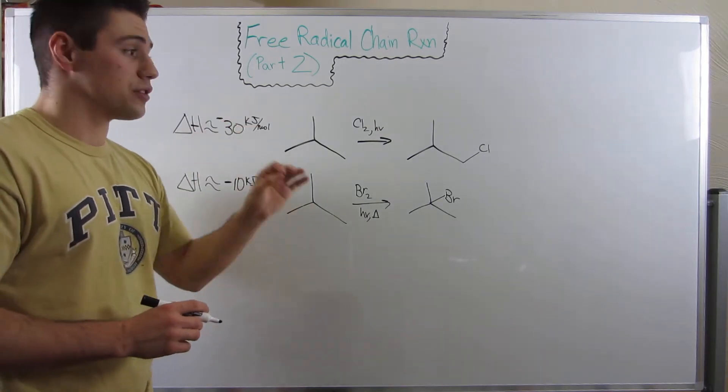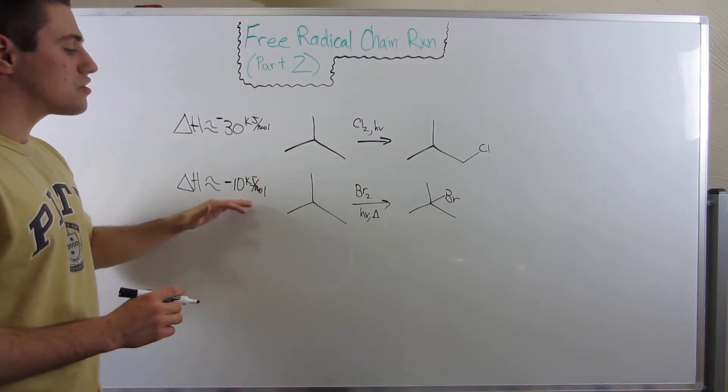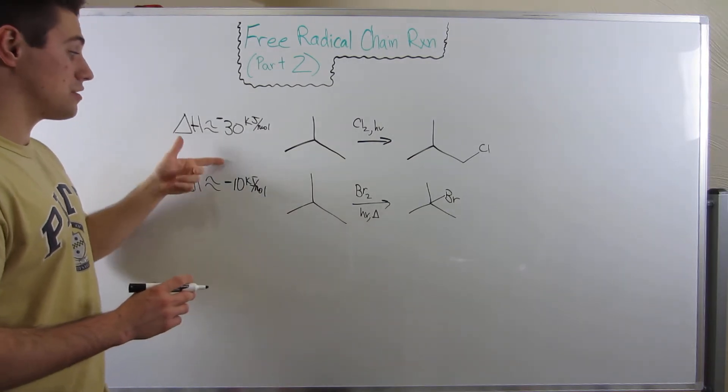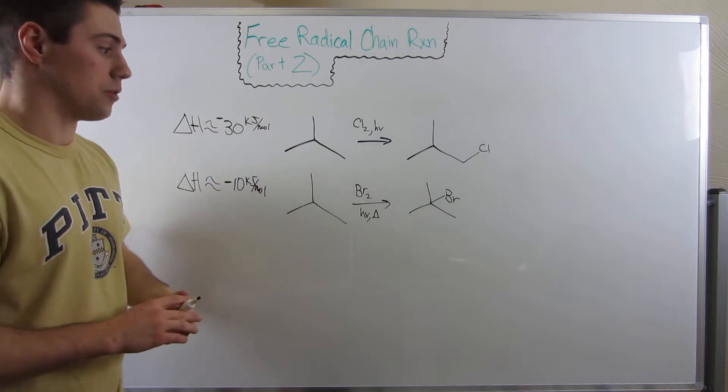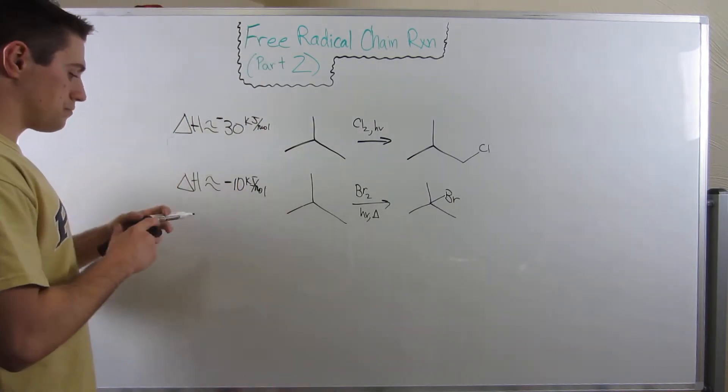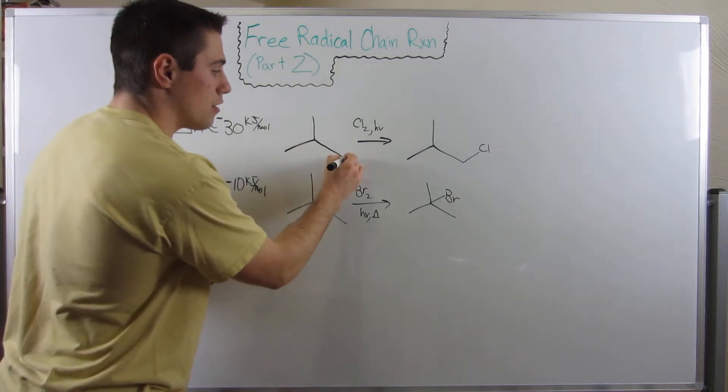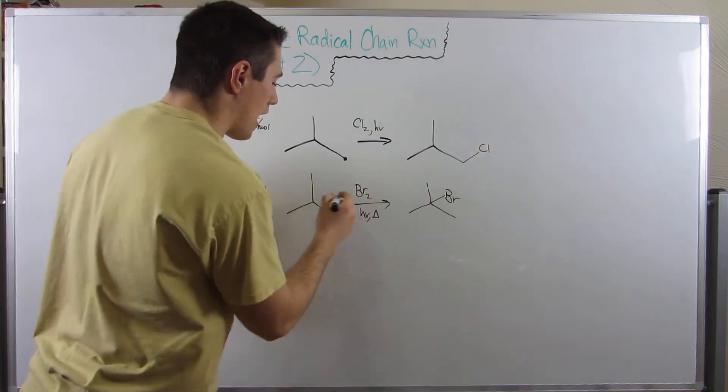On the other hand, bromine, free radical bromination, it's somewhere around or less than around negative 10 kilojoules per mole. So you can see there is a clear exothermic difference between these two. Chlorination happens very quickly. Bromine, yes still exothermic, but obviously there's a big gap between the two. Now we're going to explain, due to this thermodynamic result, this helps us explain the difference between where the halogen ends up.